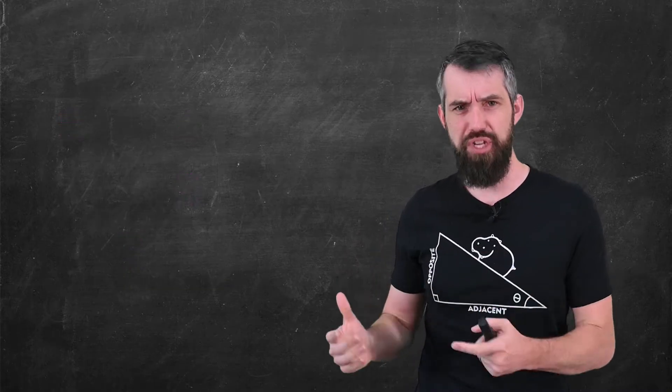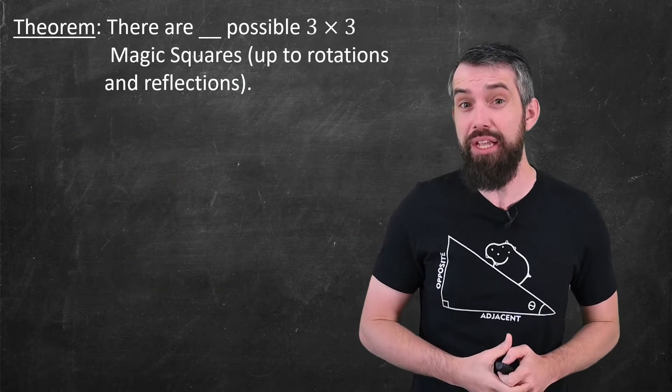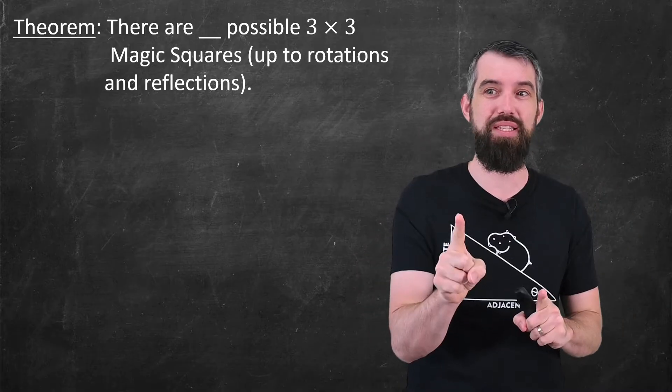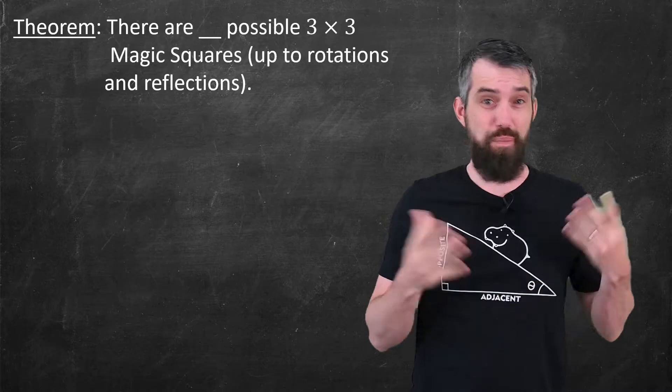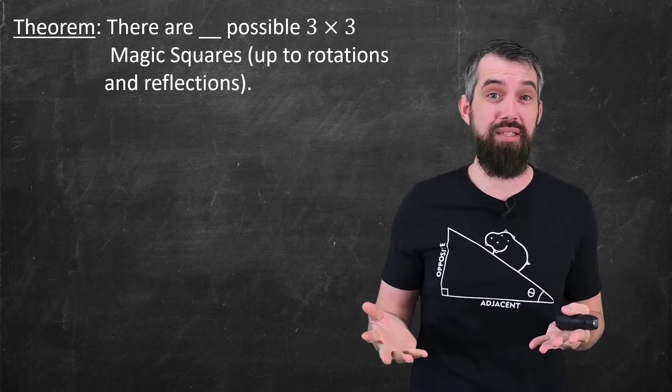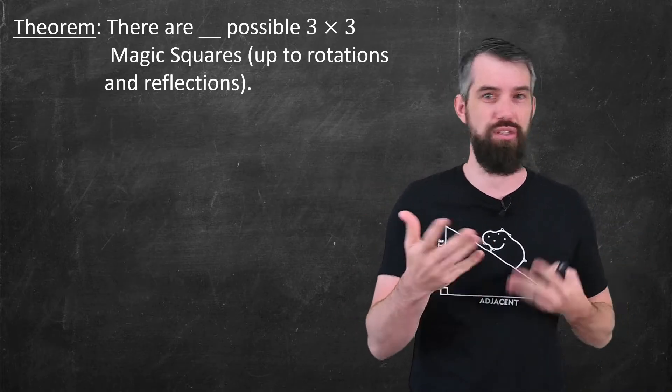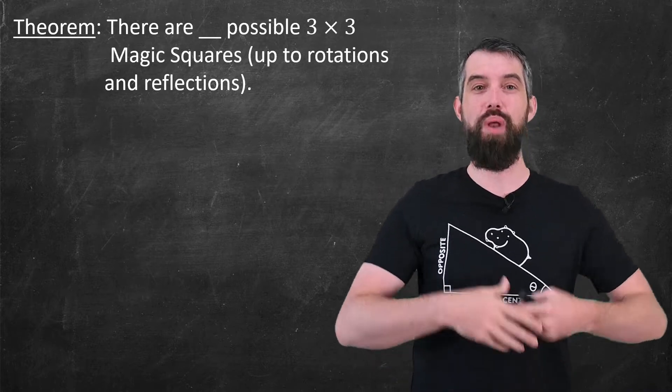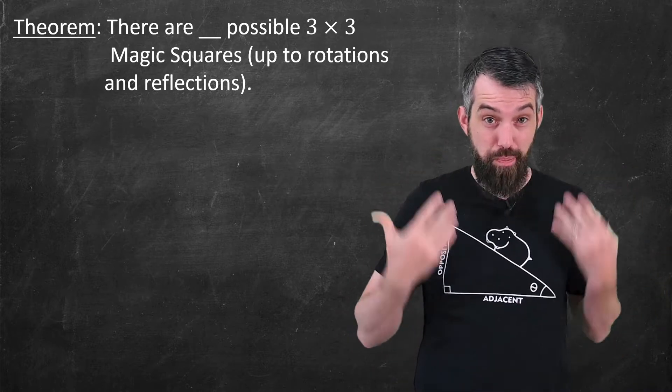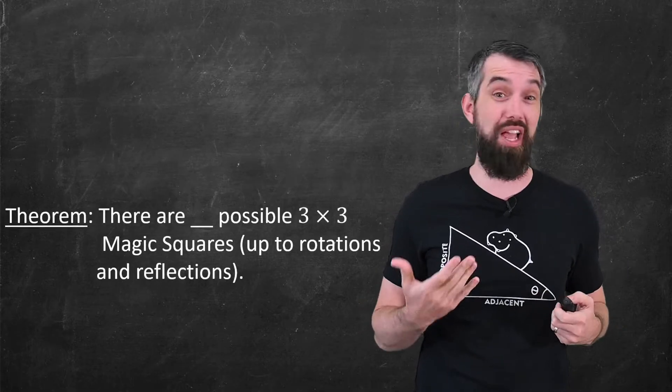So, what can we do? Well, in this video, what I'm really going to lead to, spoilers, is a theorem that says there are some number, we'll figure out the number as we go along, of possible 3x3 squares, up to rotations and reflections, we'll talk about those. Now, if you want to pause and try to prove this theorem all on your own, I encourage you to do that. But for spoilers, I'm going to break it up with a couple different lemmas.